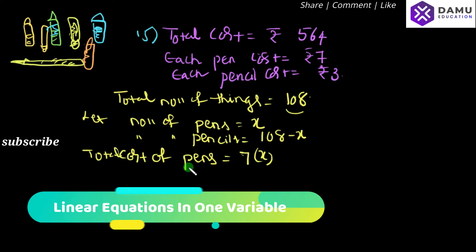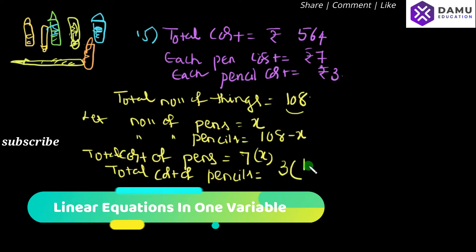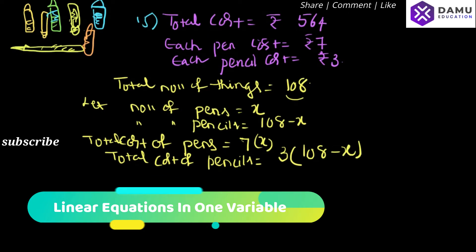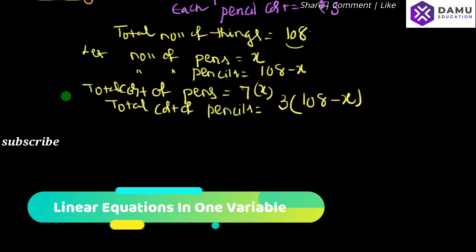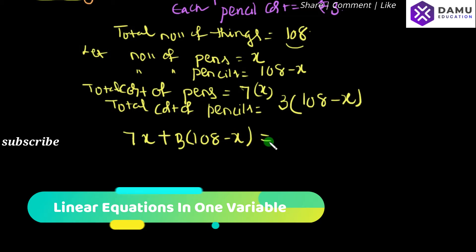The total cost of pens will be equal to 7 times x. The total cost of pencils will be equal to 3 times (108 minus x), since there are 108 minus x pencils. Adding all costs: 7x plus 3 into (108 minus x) equals 564 rupees.